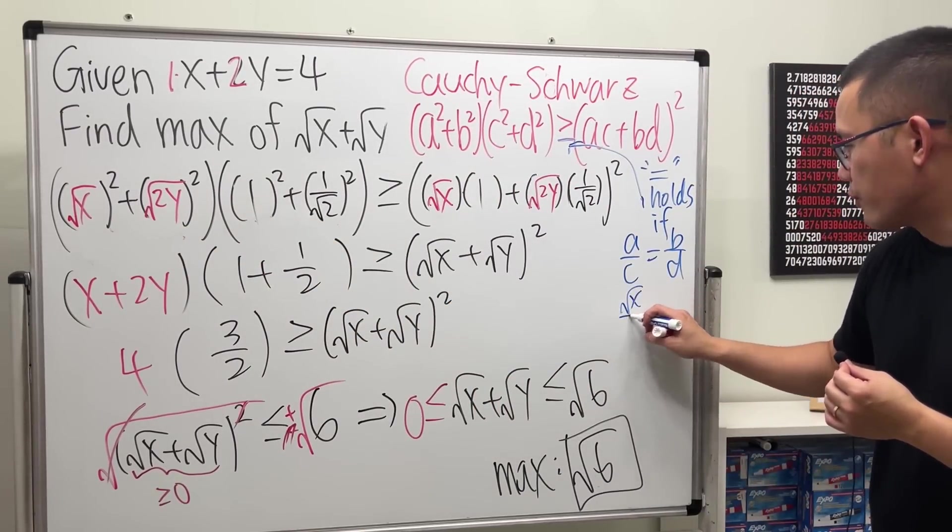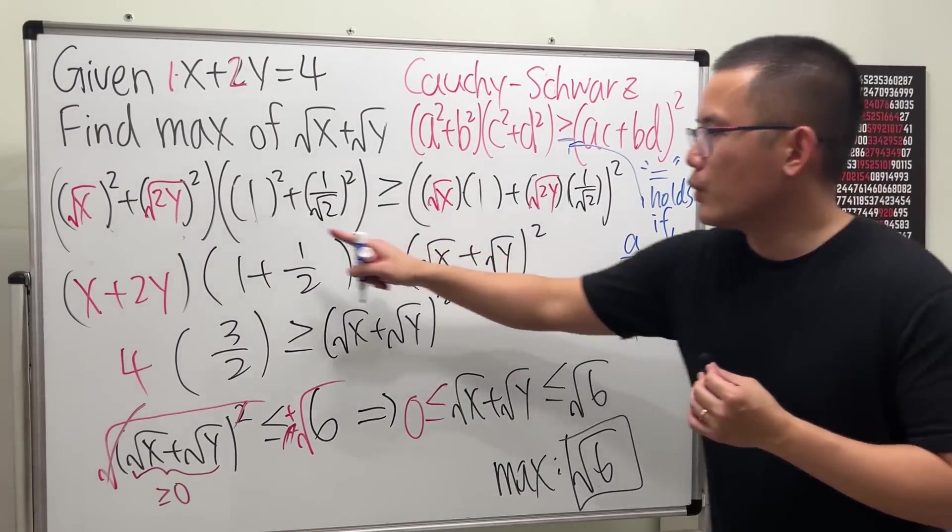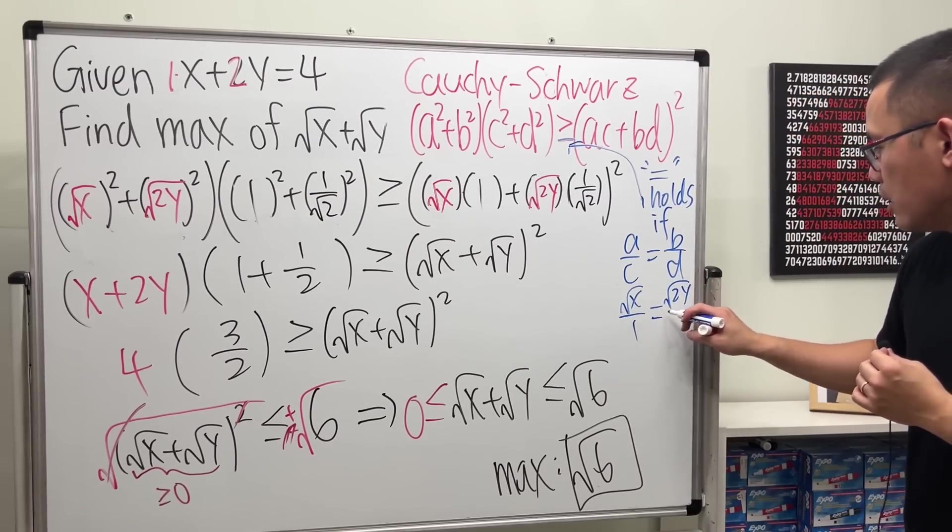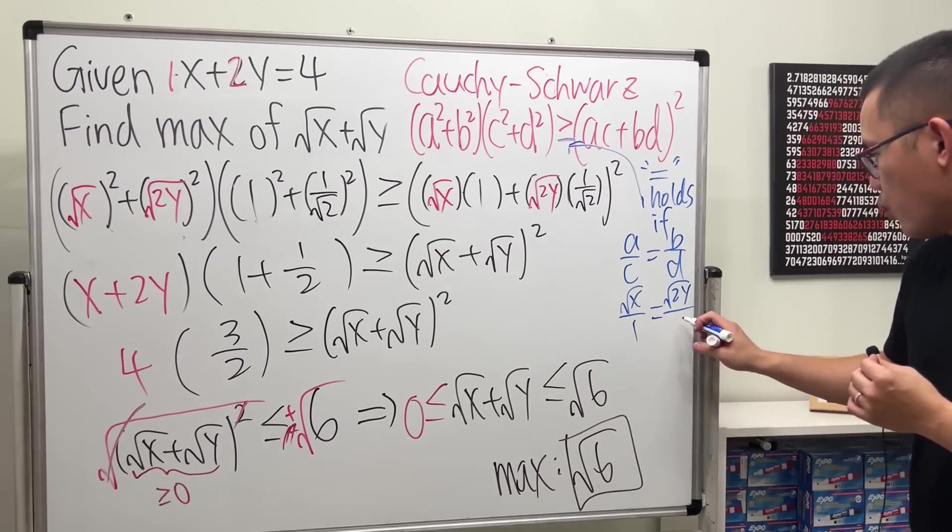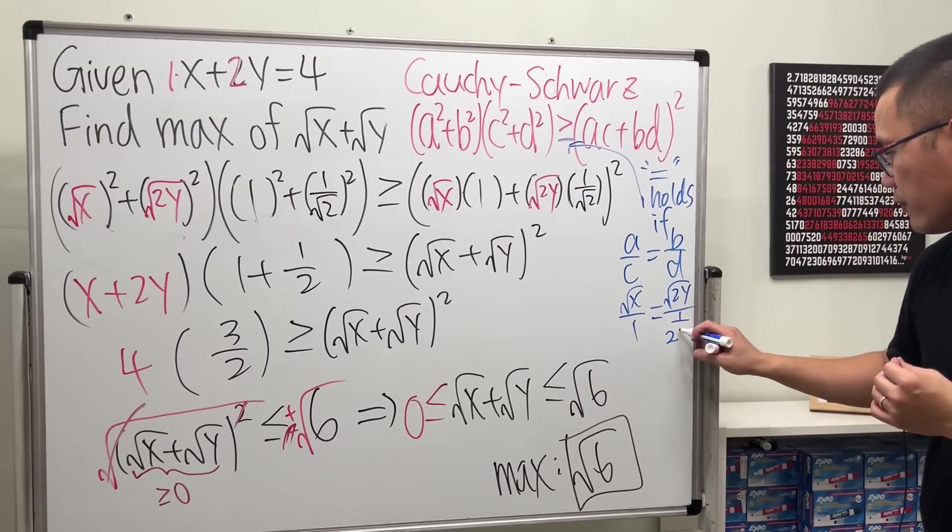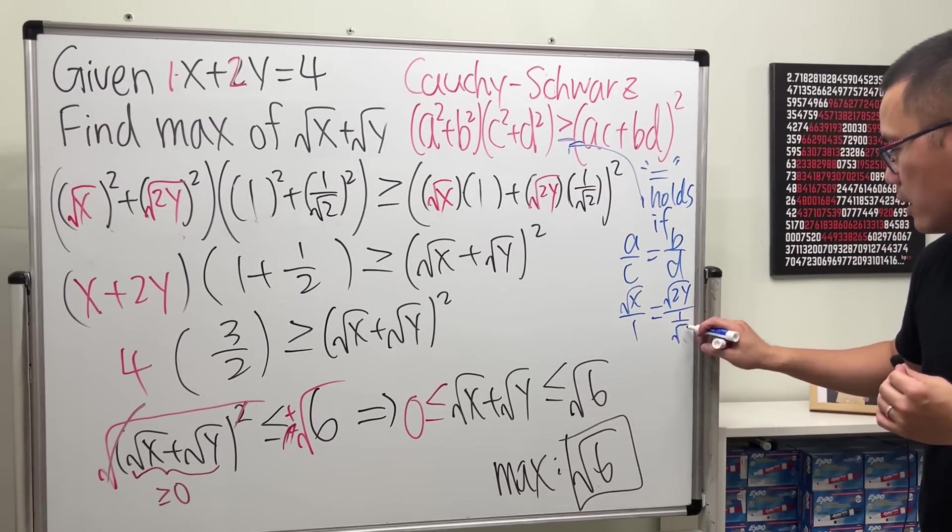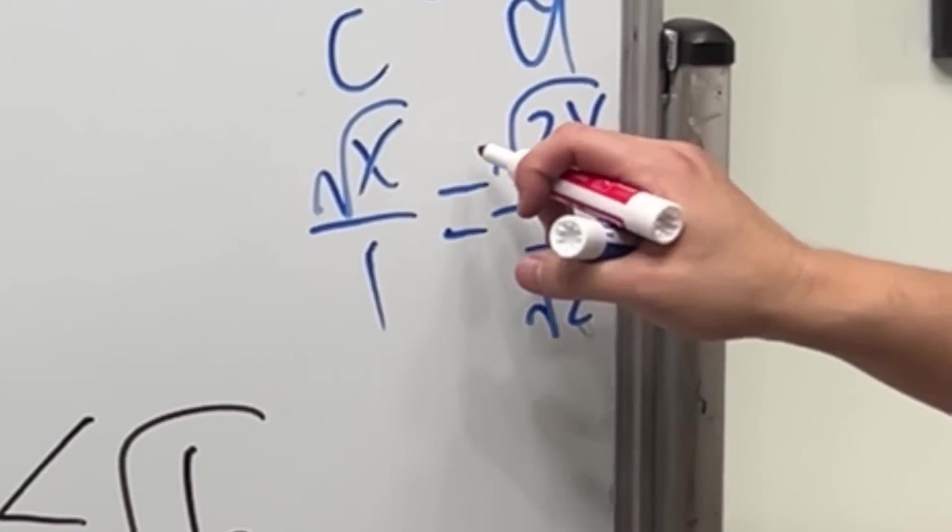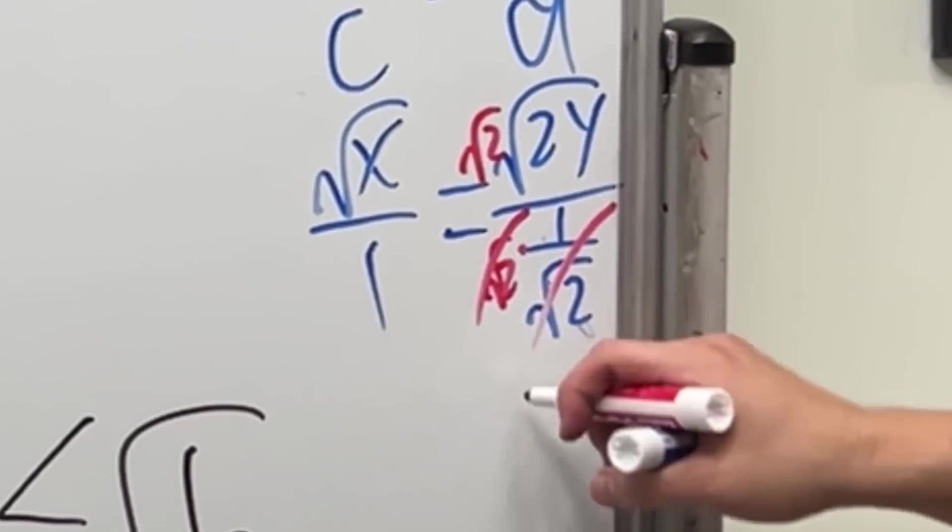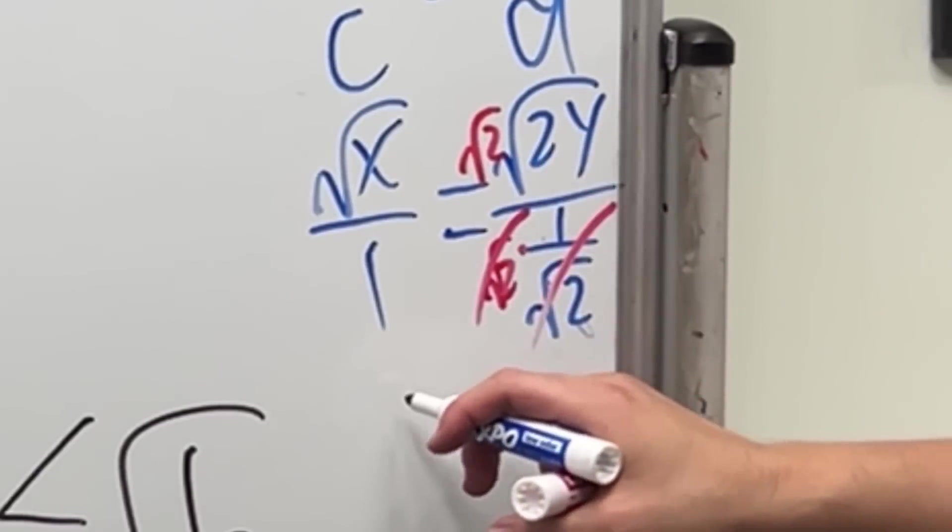So, square root of x over 1 has to be b, which is square root of 2y, over that 1 over square root of 2. Multiply the top and bottom by square root of 2. Then, you can see this and that cancel. That would be just a 2. So, condition 1, square root of x is equal to 2 square root of y.